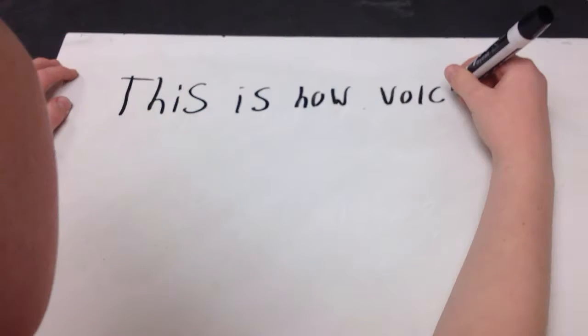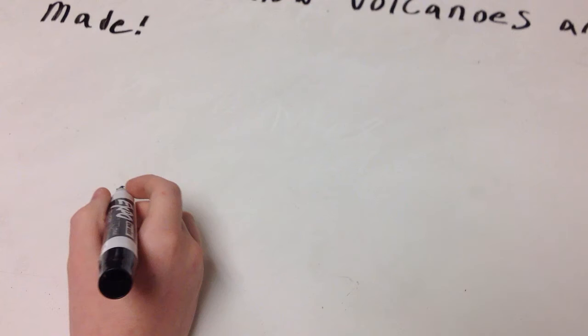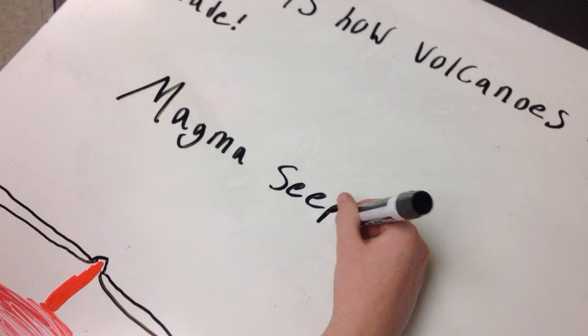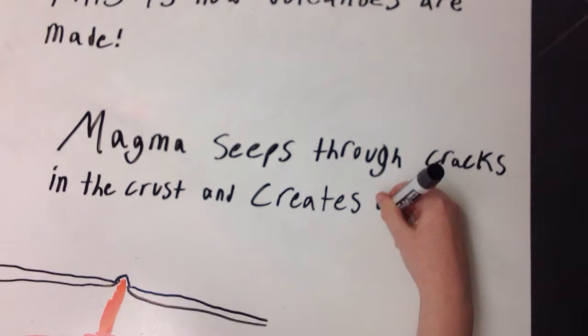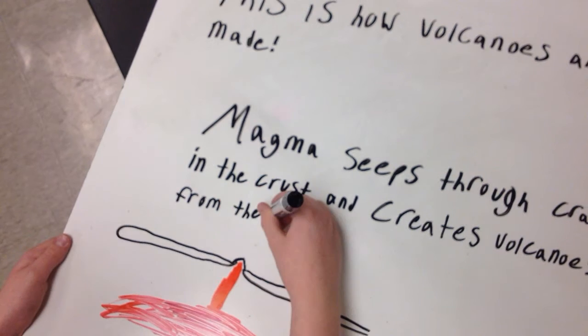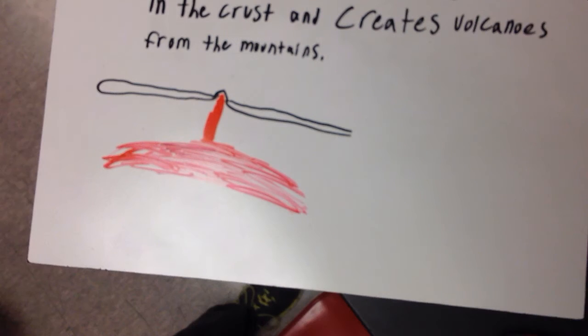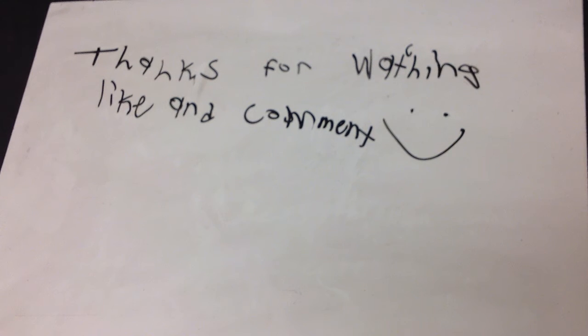Convergents also make up volcanoes. When convergents come together, they make the magma seep through the cracks, and the volcano, or the earth's crust, tries to cover it. That's what makes the volcano like a cone.